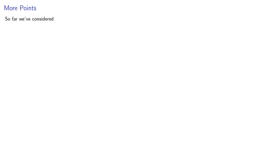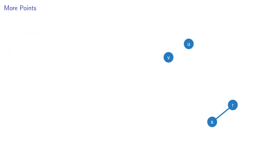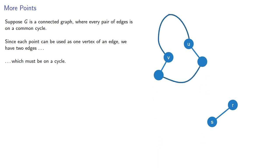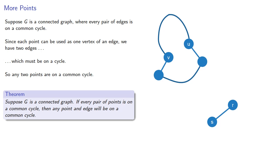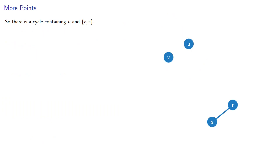Let's take stock. So far we've considered two points, a point and an edge, and two edges — in each case we have two things. What if we have three things? Let's consider two points u, v and an edge between two vertices r and s. Begin where we end: suppose g is a connected graph where every pair of edges is on a common cycle. Since each point can be used as one vertex of an edge, we have two edges which must be on a common cycle, so any two points are on a common cycle. But in a connected graph, if any two points are on a common cycle, then any point and edge will be on a common cycle. And so there's a cycle containing point u and the edge rs.